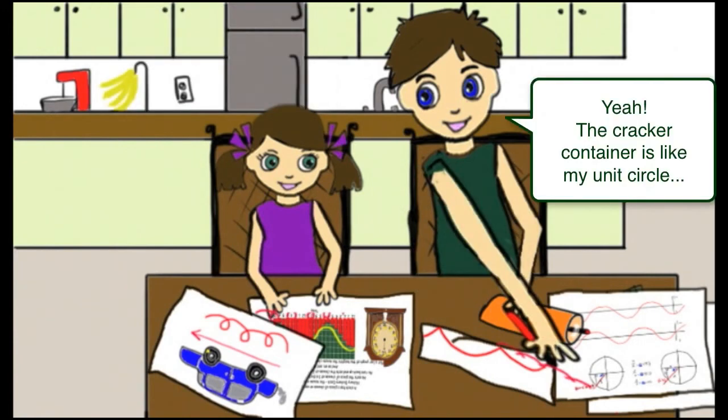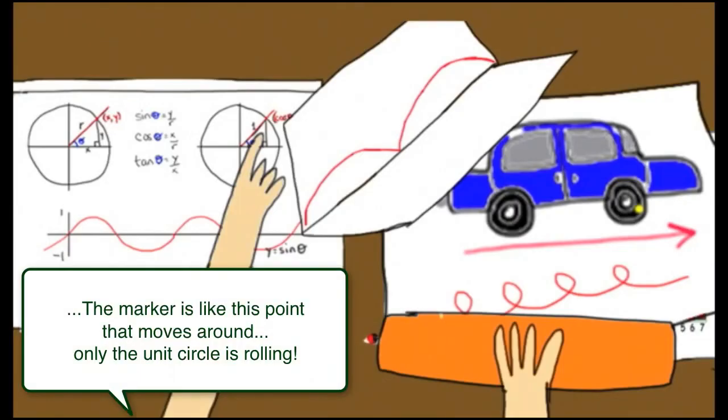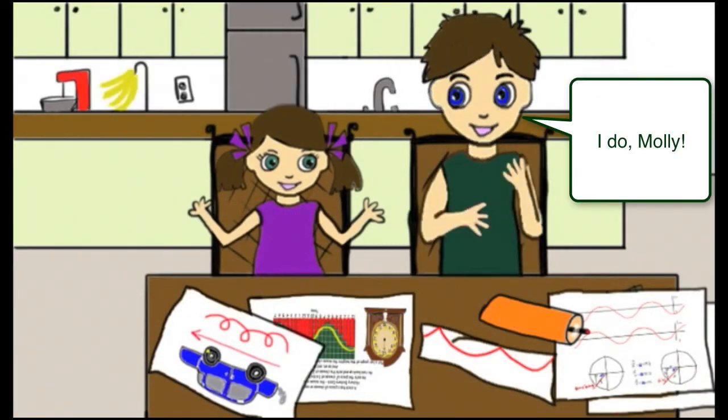Remind you of something? The cracker container is like my unit circle. The marker is like this point that moves around. Only the unit circle is rolling. Do you like my riddle? I do, Molly.